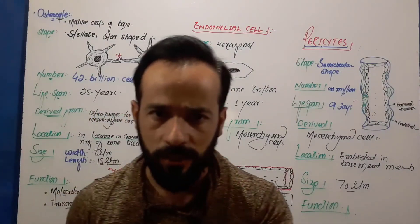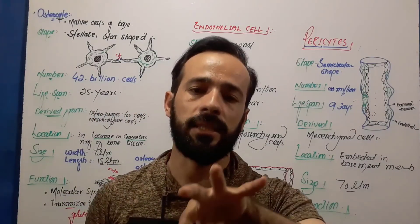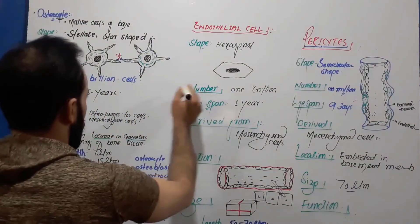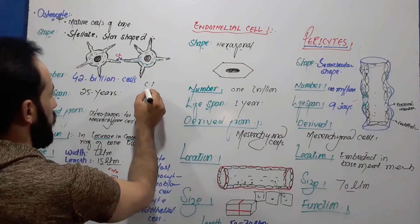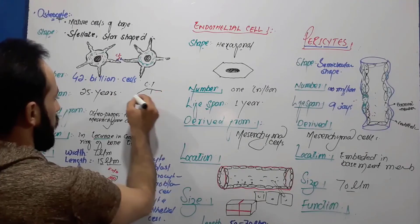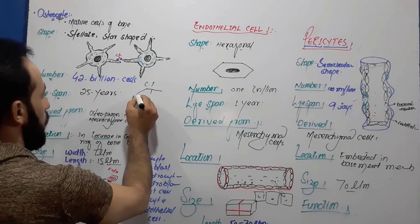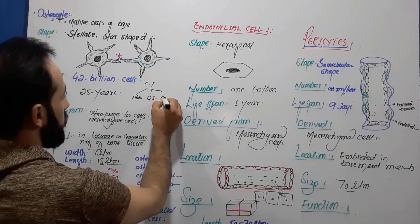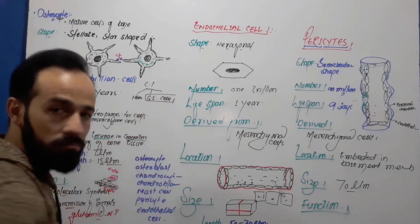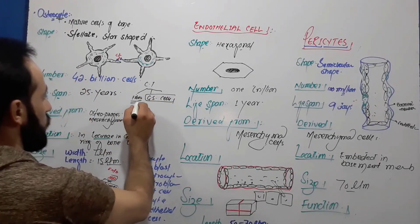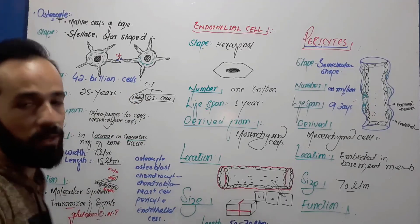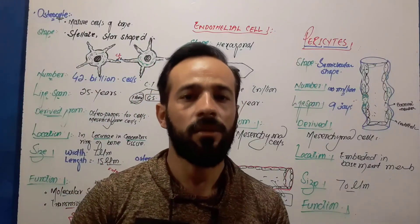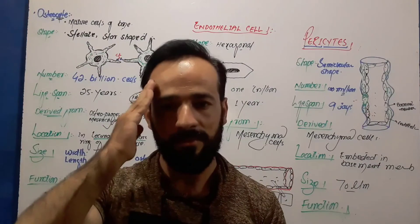Our next lecture will be about the fibers of connective tissue. Connective tissue is made up of three important components: fibers, ground substance, and cells. The next lecture will cover elastic fibers, reticular fibers, and collagen fibers. See you in the next lecture.